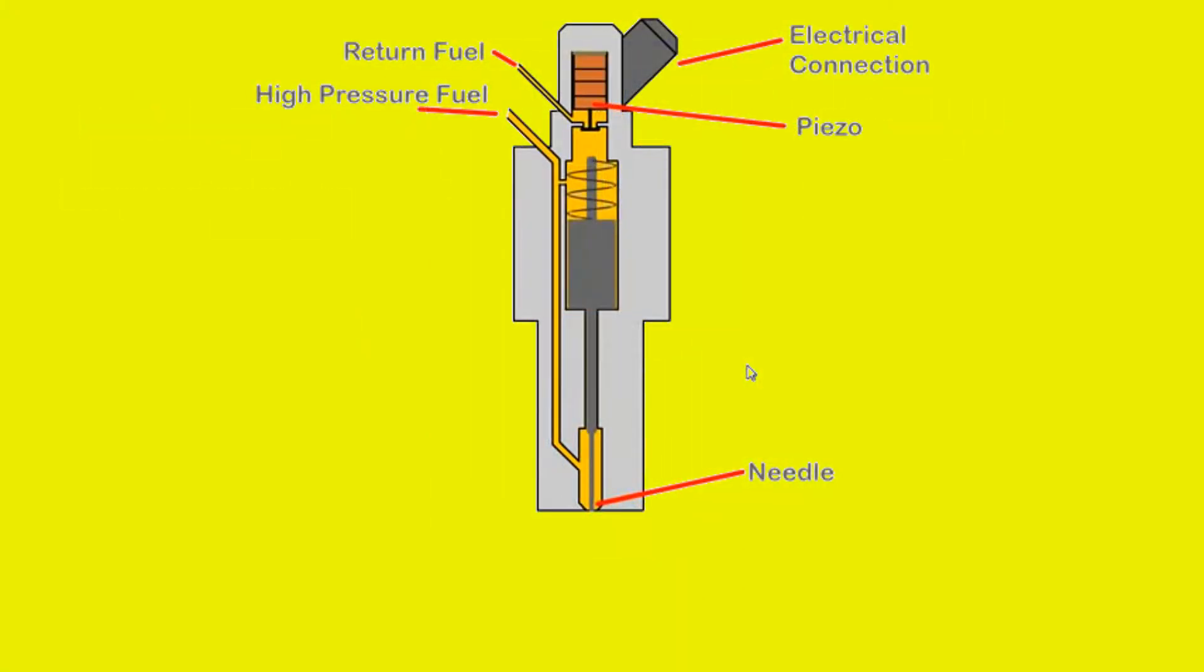Here we show the operation of a fuel injector. Fuel enters through this pipe and some flows into a small chamber above the needle through a small orifice. This high pressure fuel keeps the injector closed. When the ECU, the electronic control unit energizes the piezo crystal, it expands and the valve moves down releasing the pressurized fuel in the top chamber. The high pressure fuel moves the needle up and the fuel is injected.